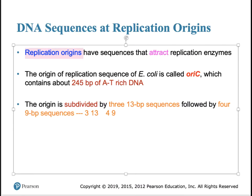Replication bubbles cannot form randomly along the DNA — the same spot is chosen each time. In bacteria, there is normally one origin of replication. The replication origin has a particular sequence, normally rich in A and T. A region rich in A and T requires less energy to separate because A-T base pairs only have two hydrogen bonds. This is a physical outcome based on chemistry and thermodynamics. In E. coli, that region is 245 base pairs long and has been named oriC. When we dissect this 245 base pairs, we find three 13-mer sequences on one side, followed by four 9-mer sequences.